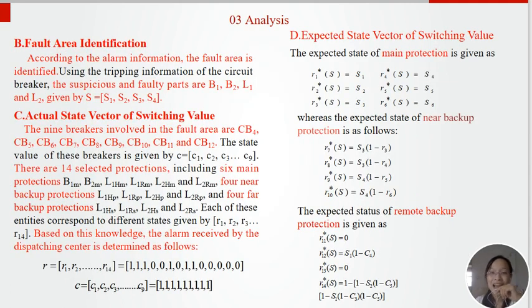Fault area identification. According to the alarm information, the fault area is identified. Using the tripping information of the circuit breaker, the suspicious faulty parts are buses 1, buses 2, and line 1, line 2, given by S equal to S1 to S4.